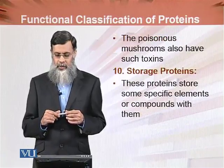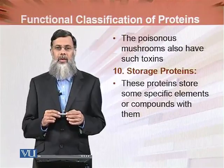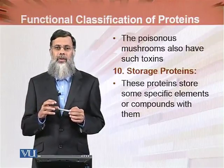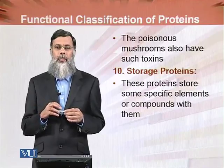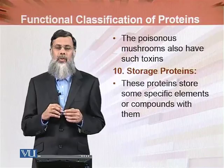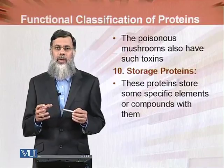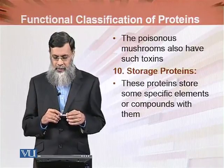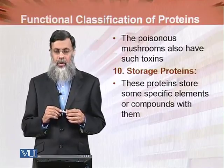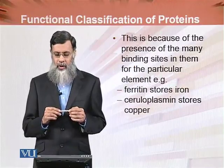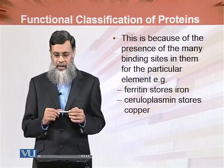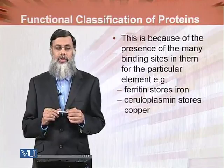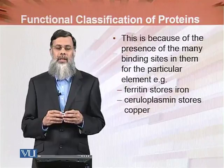Poisonous mushrooms also have such types of toxins which are also proteins. The next class is the storage proteins. These proteins store specific elements or compounds with them because of the presence of many binding sites for particular elements. For example, ferritin stores iron and ceruloplasmin stores copper — these are two examples of storage proteins.